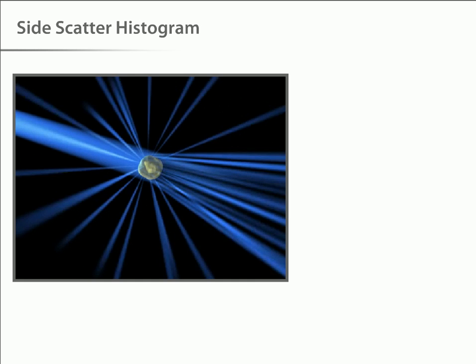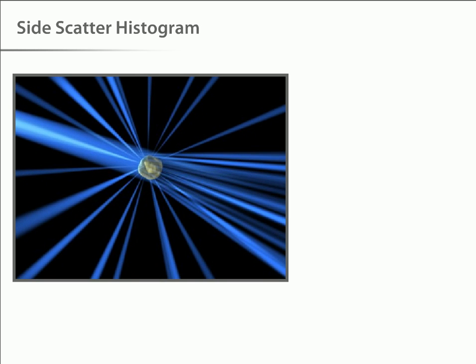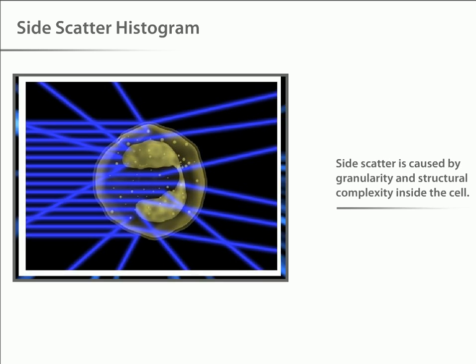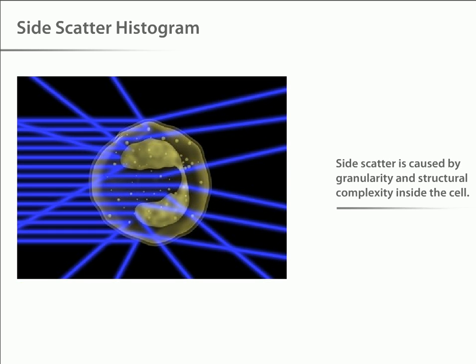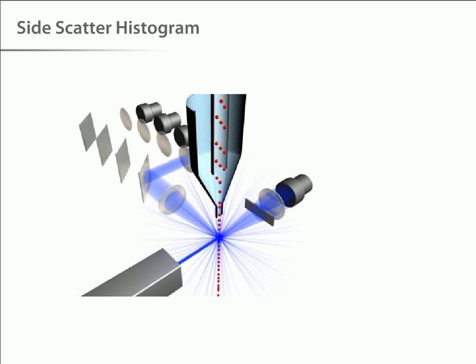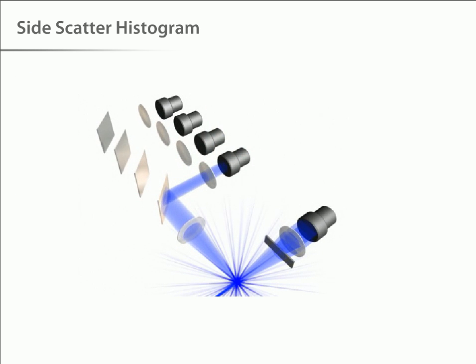As we have already seen, a cell traveling through the laser beam will scatter light at all angles. Light scattering at larger angles, for example to the side, is caused by the granularity and structural complexity inside the cell. This side-scattered light is focused through a lens system, and is collected by a separate detector, usually located 90 degrees from the laser's path.